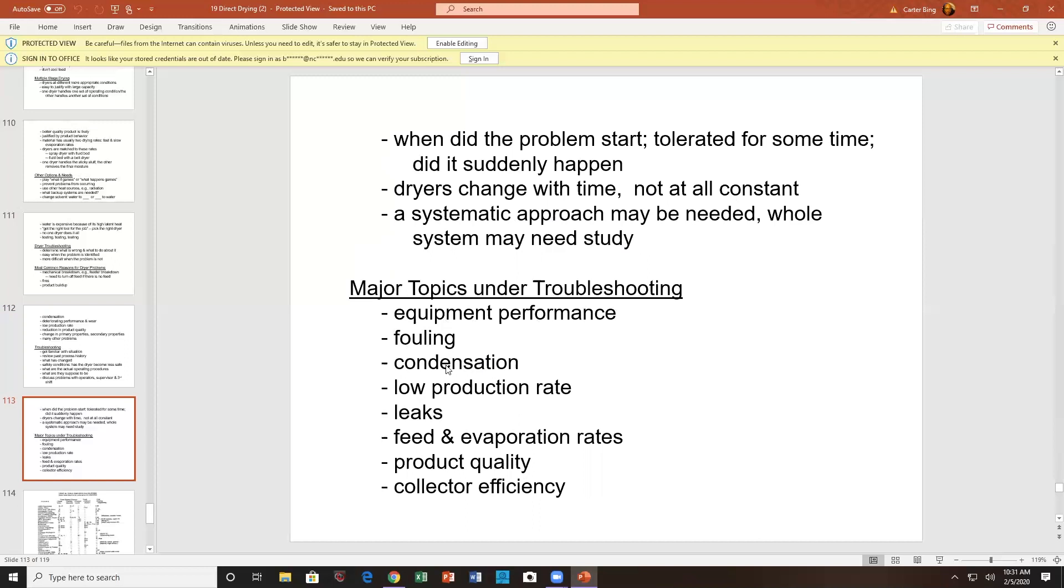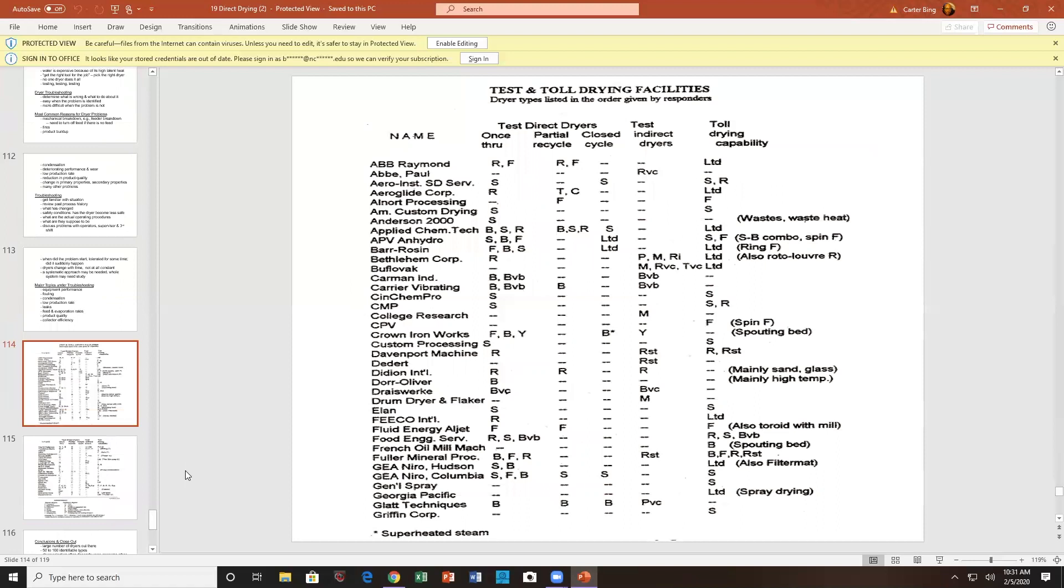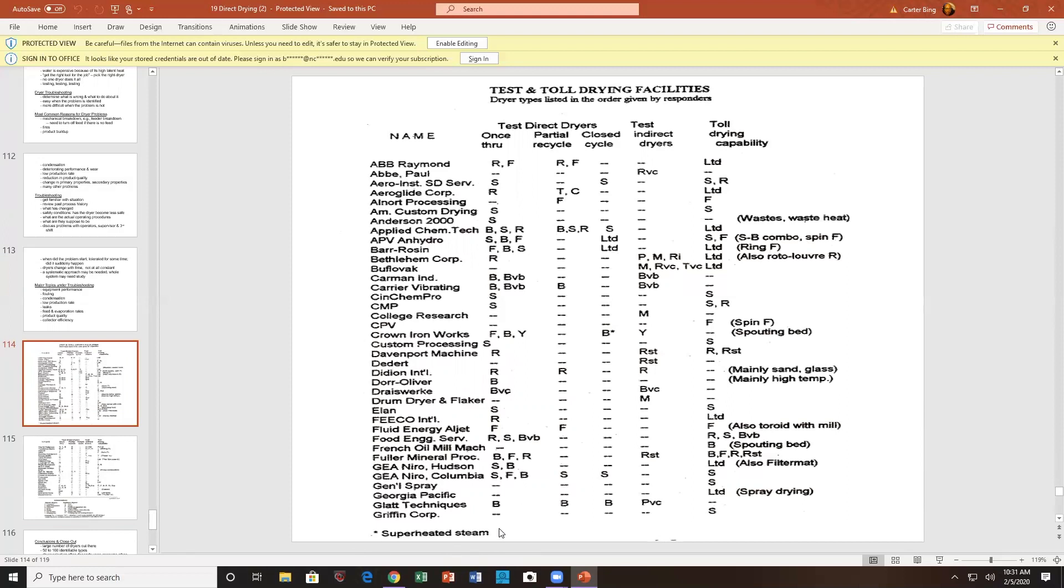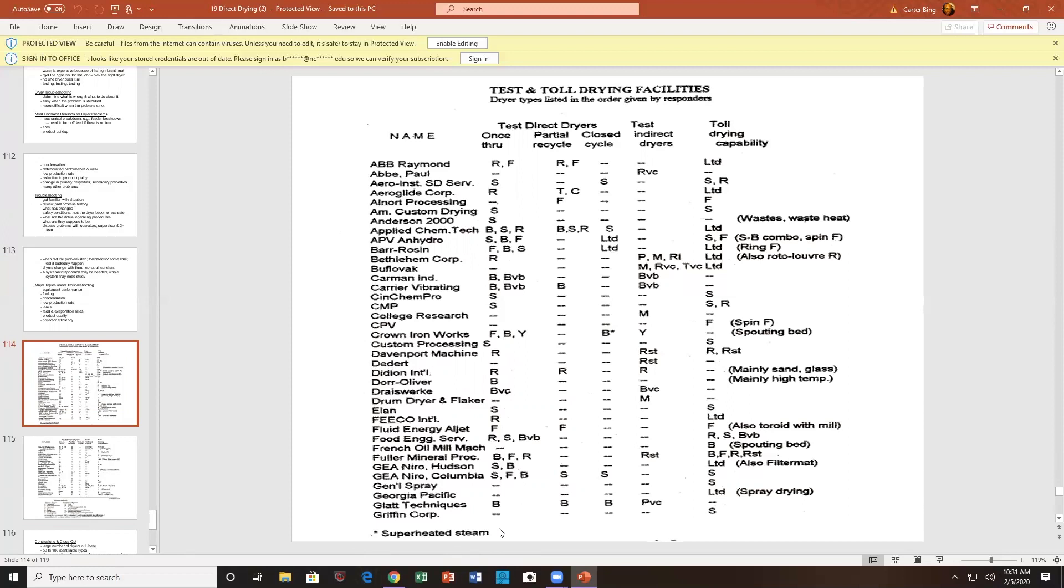Typical topics under troubleshooting, equipment performance, filing condensation, leaks, evaporative rates, product quality, collector efficiency, condensation, low production rates. This is a list of different dryers and their capabilities. This is the legend that explains what the B's and the R's and the S's and the T's stand for. This list is provided to you by Cook and Dumont. I don't claim this, just passing it all to you all.